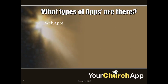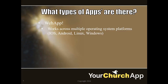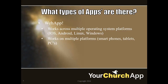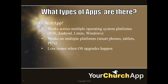The other type of app is a web app. What makes a web app unique? First, they work across multiple operating systems such as iOS, Android, Linux, and Windows, and they work across multiple platforms including smartphones, tablets, and PCs. Because the app is not dependent upon the local operating system, there are fewer issues when operating system upgrades happen.